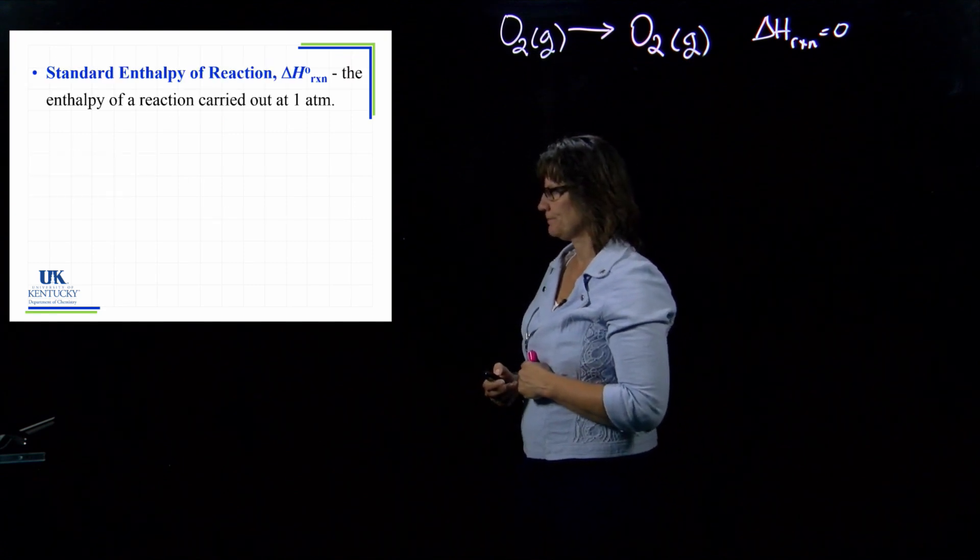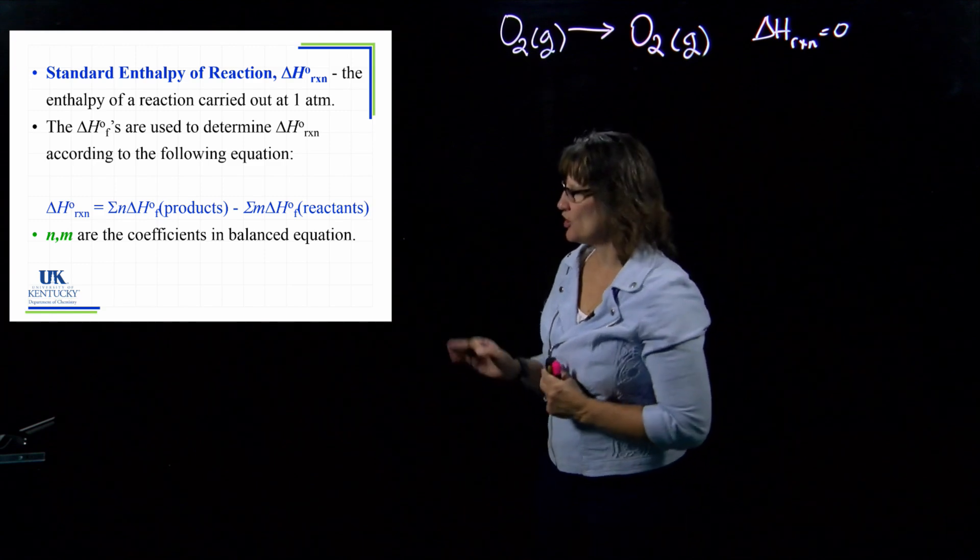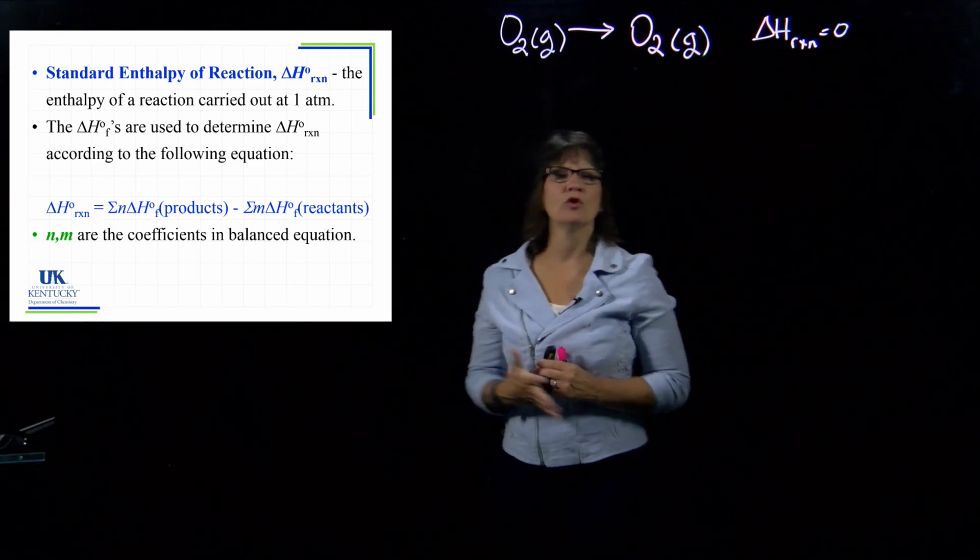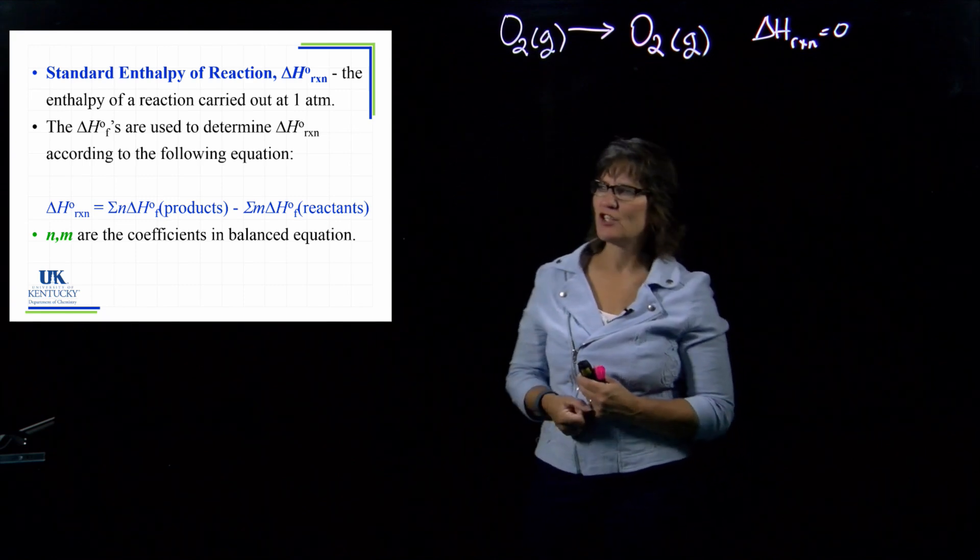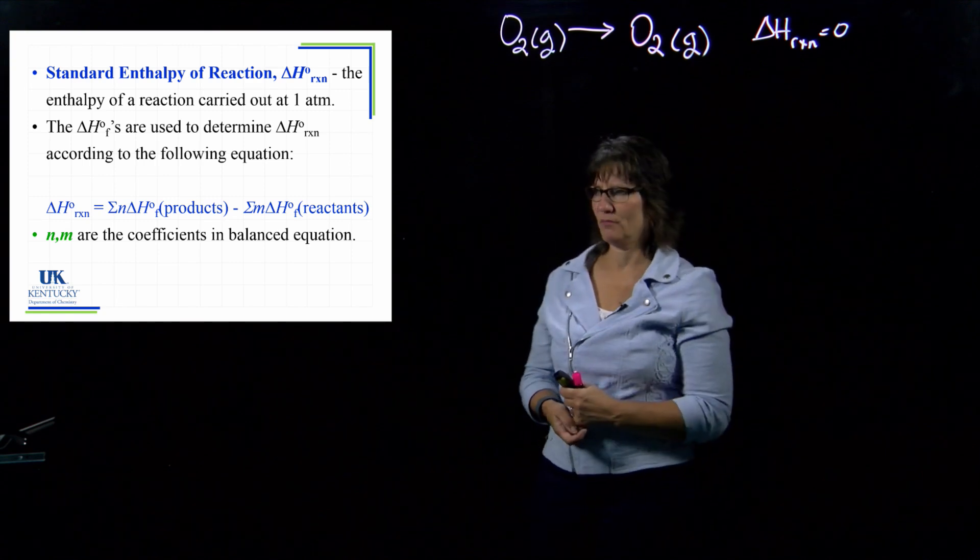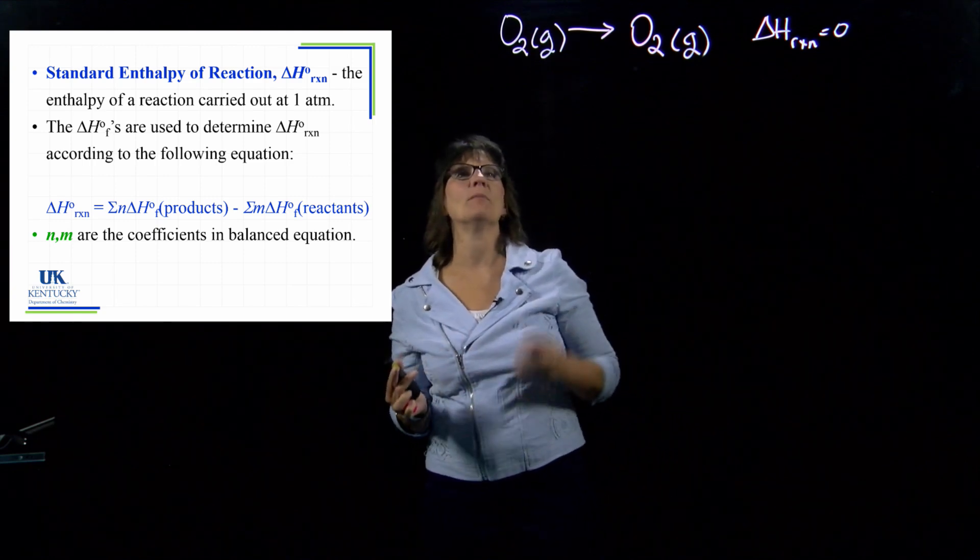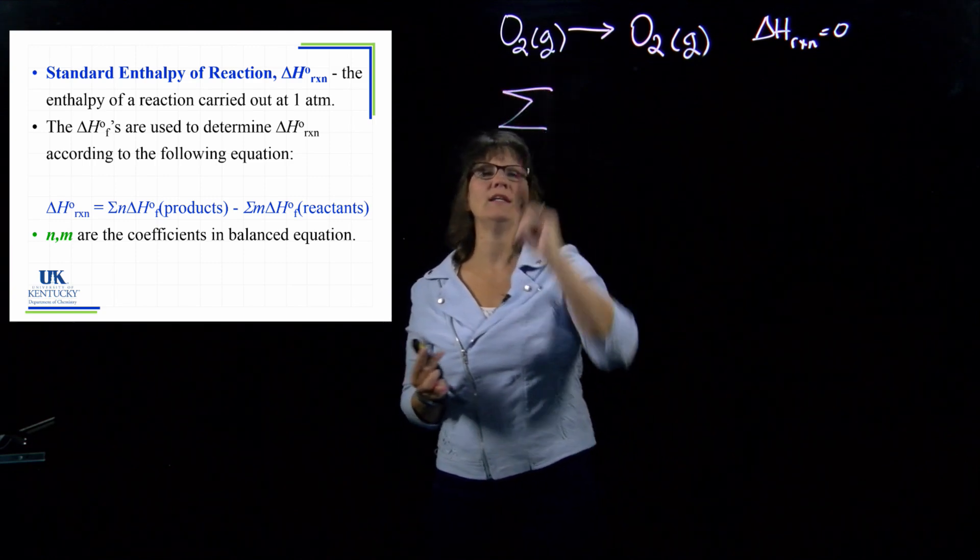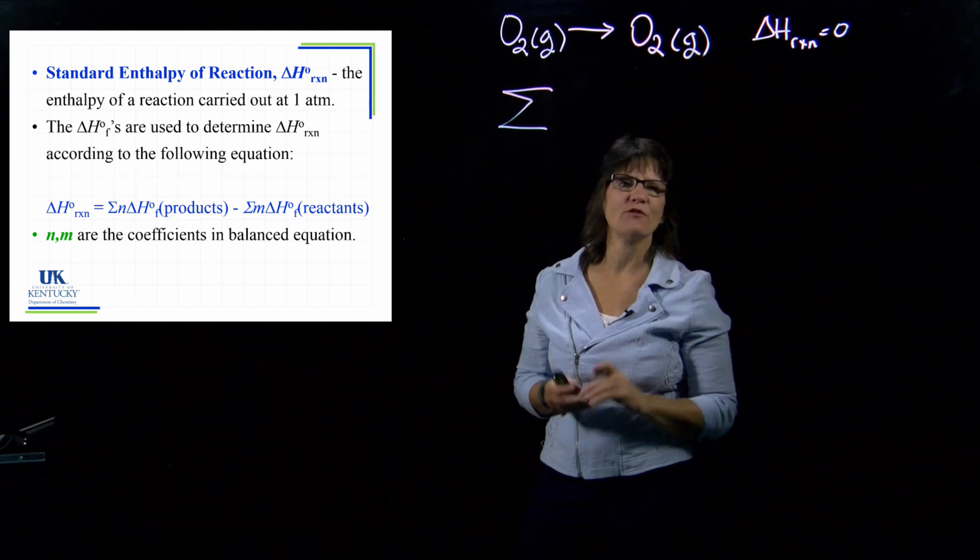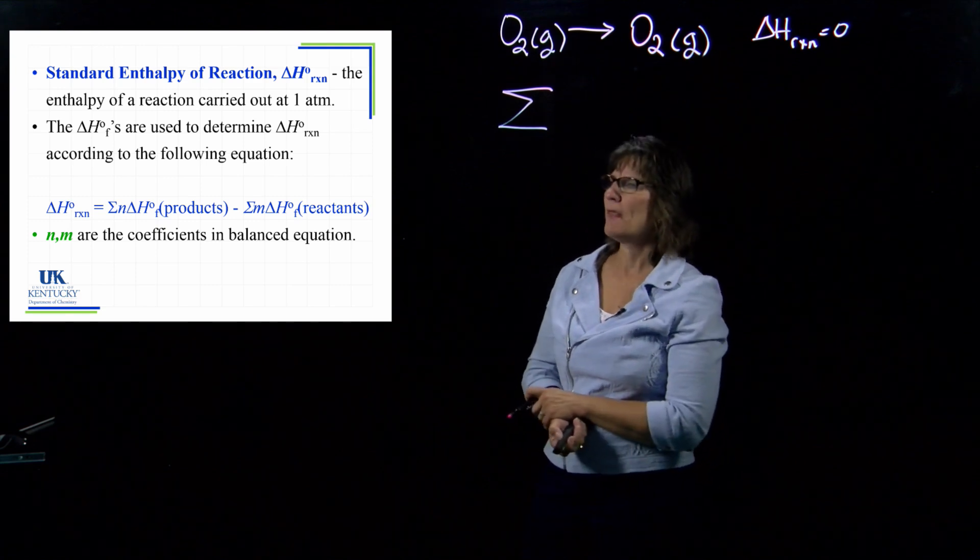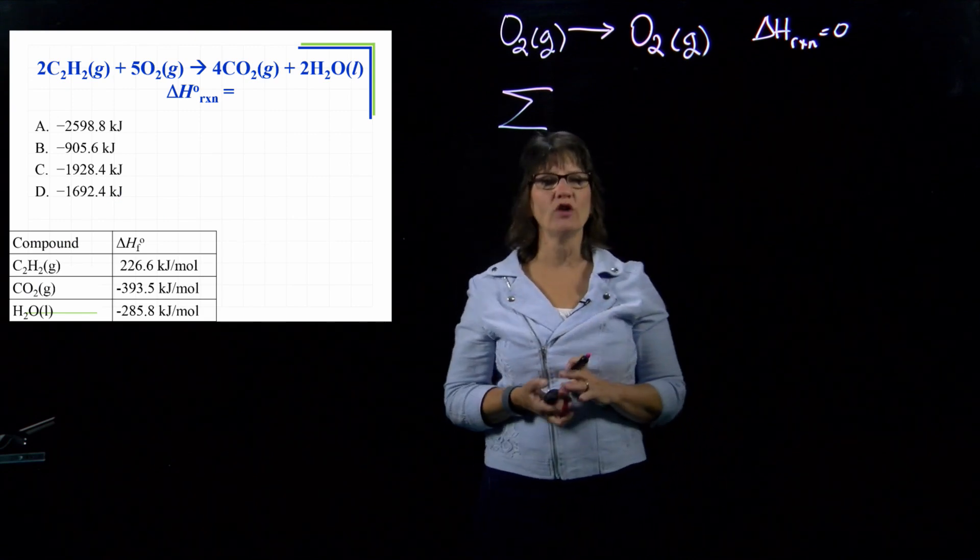Now, let's see how we would utilize this. So the delta H of formation, what we'll do is we'll sum up the delta H of formation of all the products, that's the final stuff, minus the delta H of formation of all the reactants, that's the initial stuff. So that symbol there that we see, this symbol, that's the summation symbol. We're going to add them all up. We see the N in that equation. We see the M in that equation. Those stand for the coefficients that we see in the balanced equation. So with that equation, we'll work on this. I'm going to start you going, and then you're going to finish it off. We look at the equation, and we want to know the delta H of this reaction.